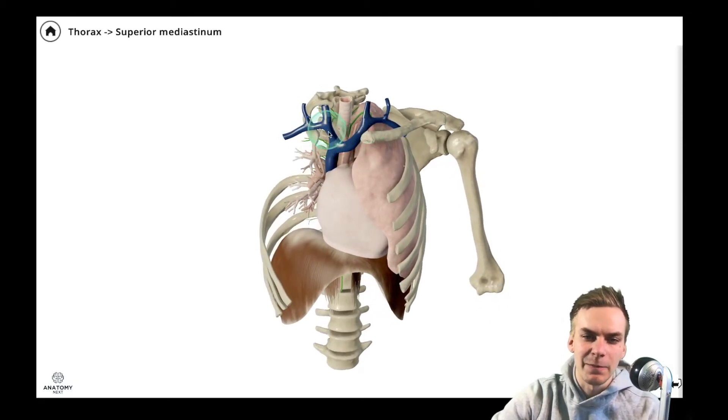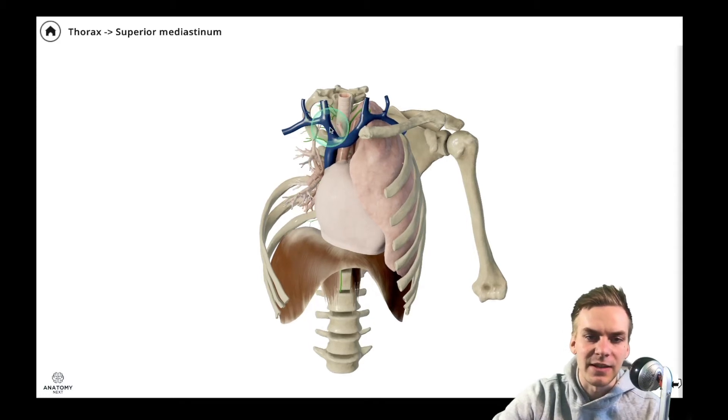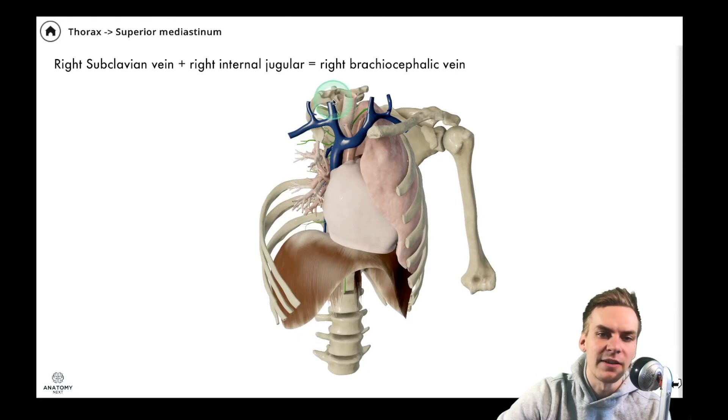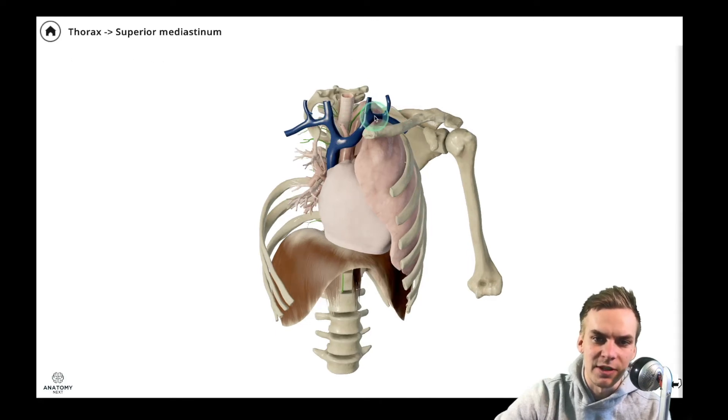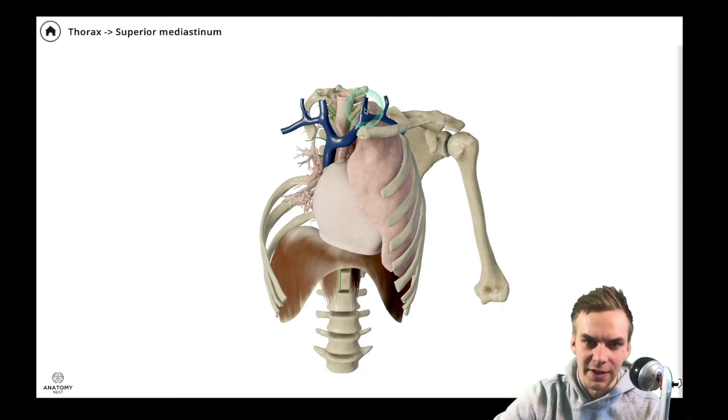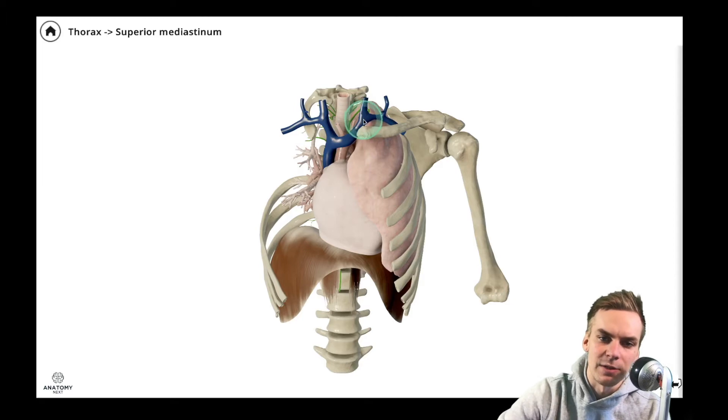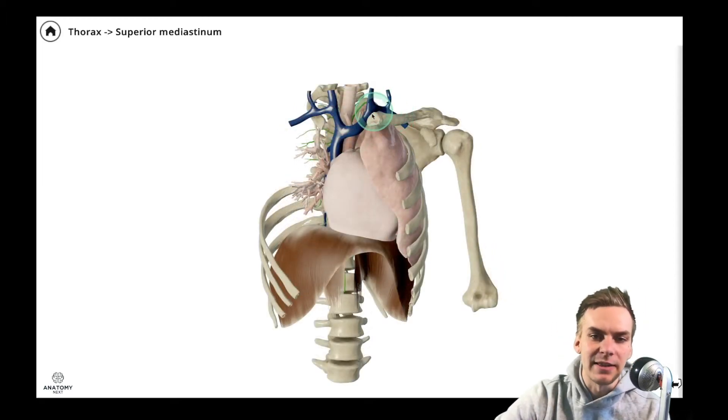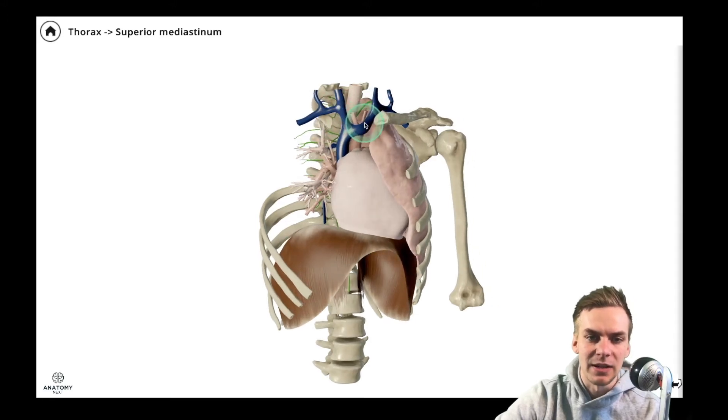Here you can see the right and left brachiocephalic veins and these veins on both sides are formed by the subclavian and internal jugular veins. So you see right subclavian vein, right internal jugular vein coming together to form the right brachiocephalic vein. The same goes on the opposite side where you can see the left subclavian vein and the left internal jugular vein. Both of these veins also come together to form the left brachiocephalic vein. And here you can see the left and right brachiocephalic veins coming together right in front of the arch of the aorta to form the superior vena cava, which is one of the two largest veins of the human body.